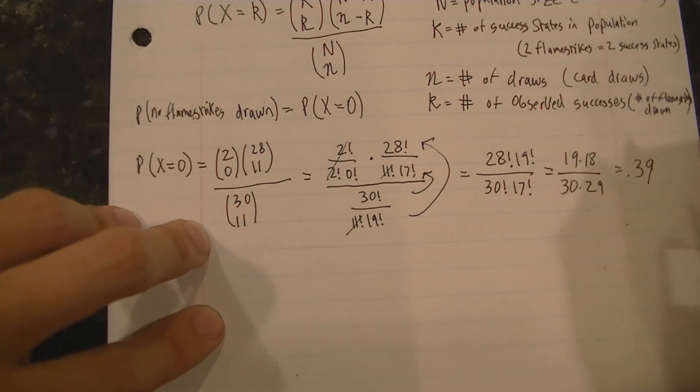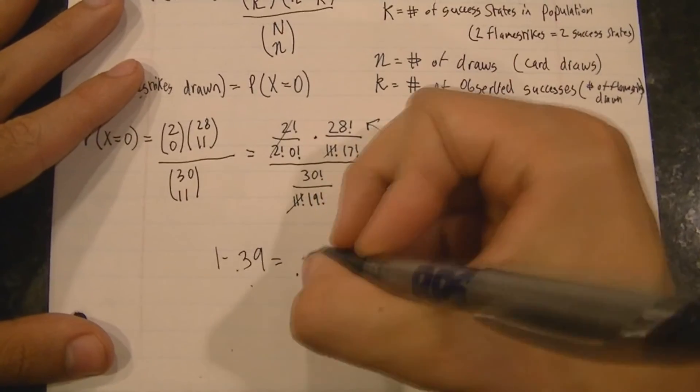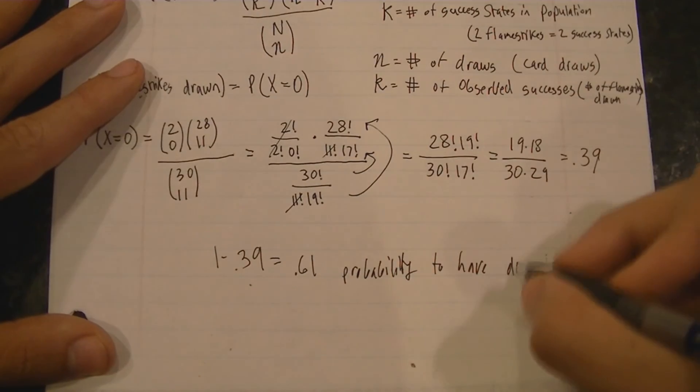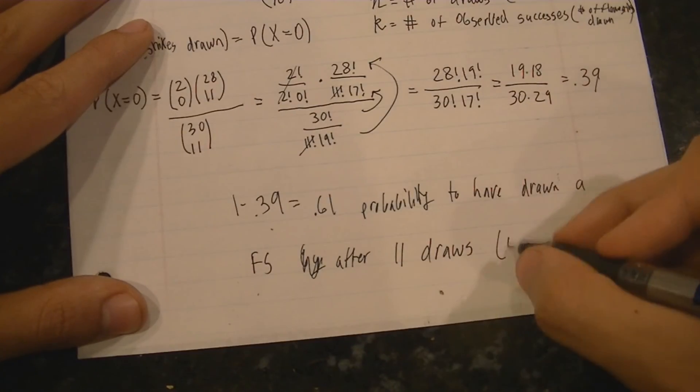We see that the numbers we are left with are very similar, in fact exactly the same as the numbers we had in the previous problem using combinatorics, and we end up with the same exact answer that we had before.